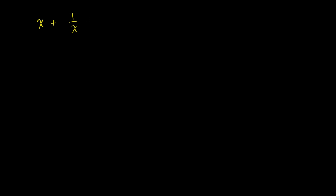Let's solve some more rational equations. So let's say I have x plus 1 over x is equal to 2. Once again, we have an x in a denominator over here. It looks kind of bizarre. But you just have to remember, if we multiply every term in this equation by this denominator right here, by this x right there, then essentially you'll have x times 1 over x and the x will disappear out of the denominator.